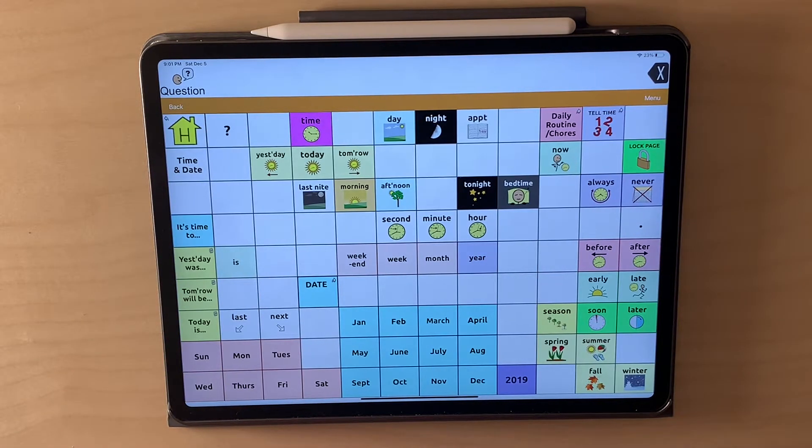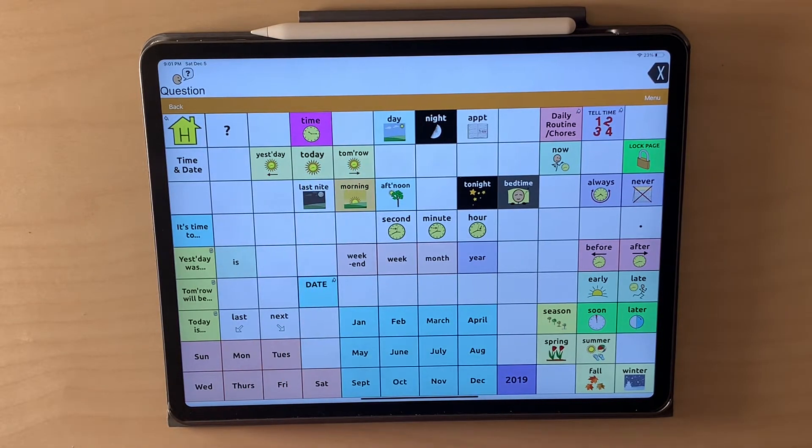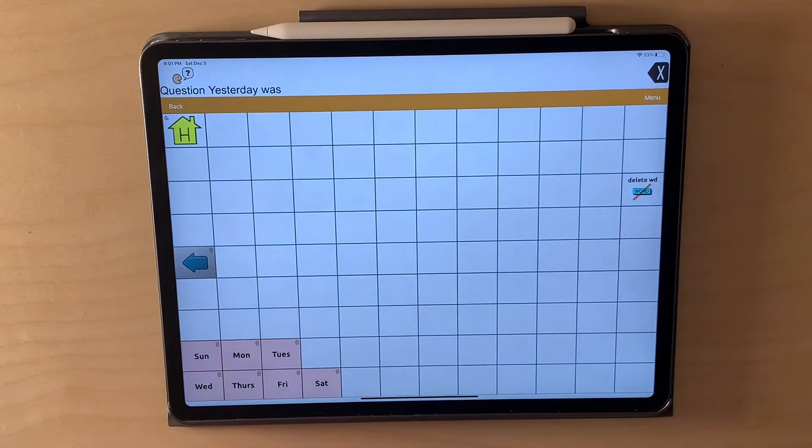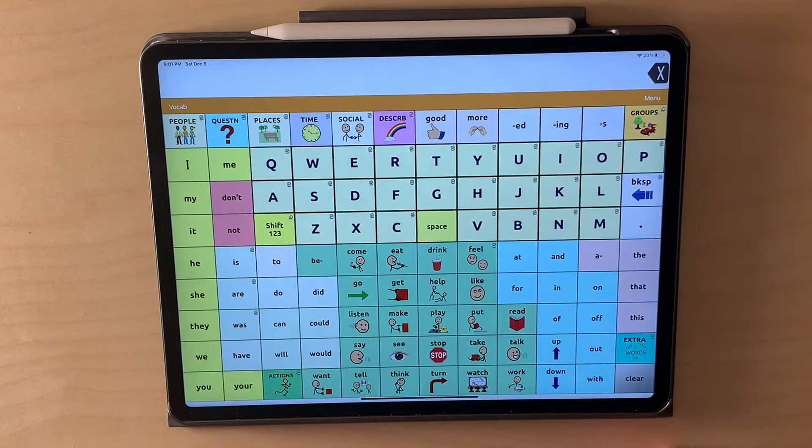Time and temporal concepts: yesterday, today, tomorrow, the seasons, the months of the year, the days of the week, some phrases related to that as well. Yesterday was Friday.